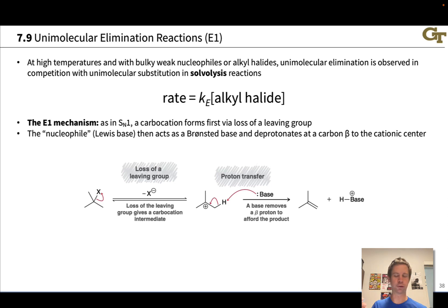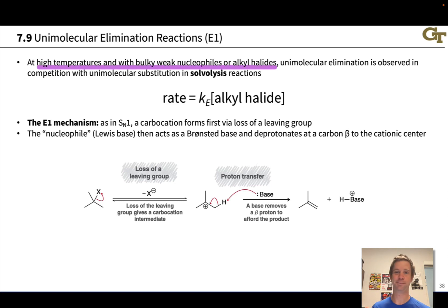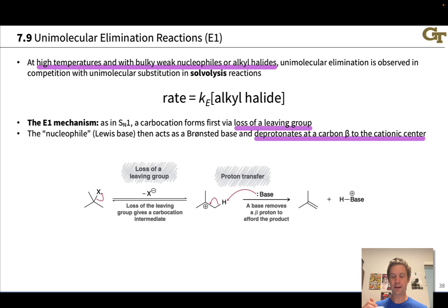At high temperatures, and when you use bulky weak nucleophiles or alkyl halides that are not inclined to do a substitution reaction, we observe an elimination reaction that is unimolecular. Its rate depends only on the concentration of the alkyl halide and not on the concentration of base at all. This contrasts with the E2 reaction, whose rate depends on both the concentration of alkyl halide and the base. These are typically run under solvolytic conditions, similar to the SN1 reaction.